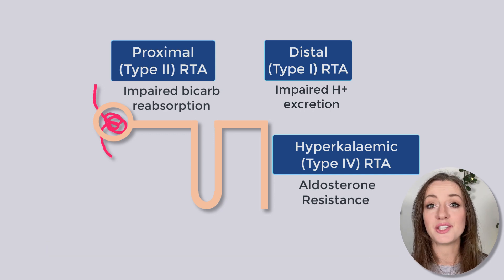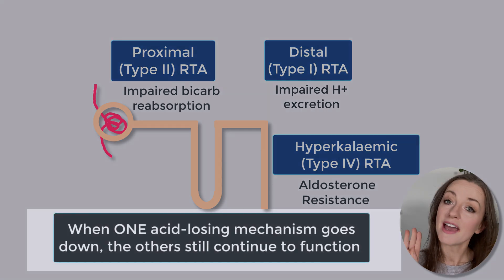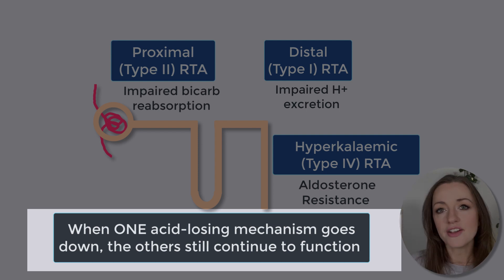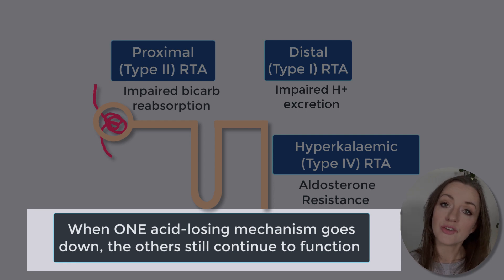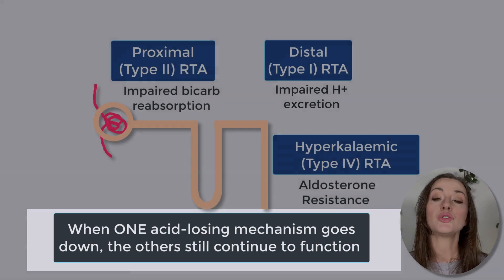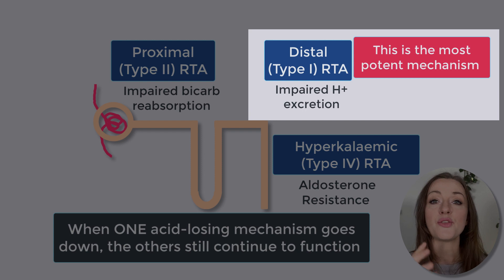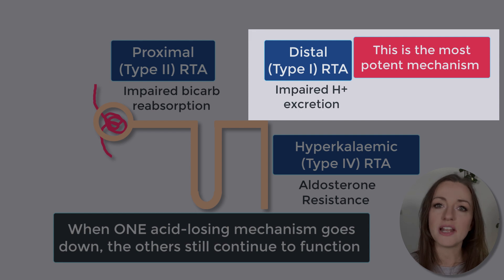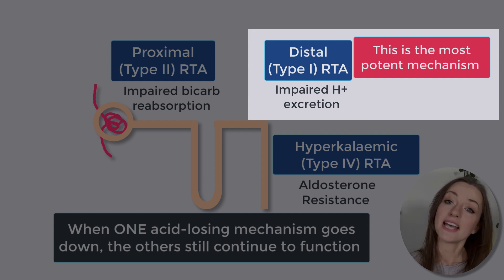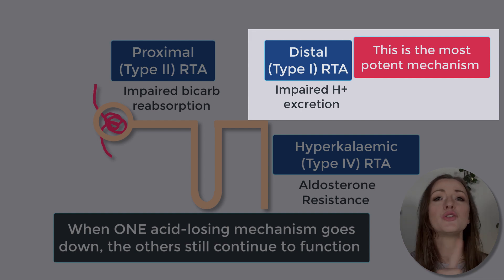There are a few key concepts that will help you truly pick RTA out of a lineup. First, because we have three mechanisms for losing acid in the nephron, when one of these goes down, the others are still there in the background — and that contributes to the biochemical patterns we see. Second, the most potent acid-losing mechanism we have is pumping acid into the lumen of the distal nephron, actively getting rid of hydrogen ions. So distal RTA, or type 1 RTA, is the most severe RTA you can possibly have.